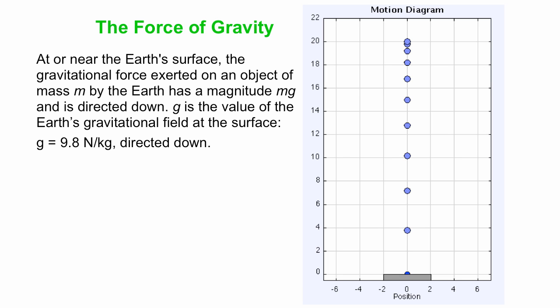Okay, so if we're at or near the earth's surface, we say the gravitational force exerted on an object of mass m by the earth has a magnitude of m times g, and it's directed down.